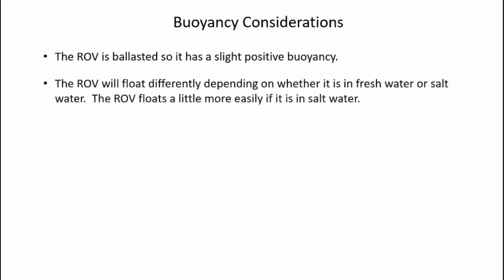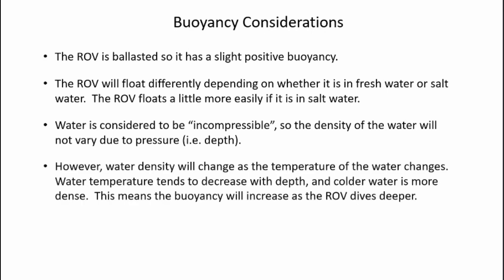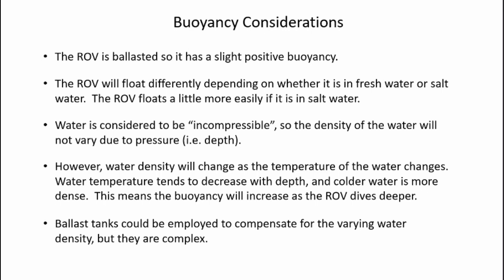System buoyancy is an important consideration when designing an ROV. My ROV is balanced so it has a slight positive buoyancy, so eventually it will rise to the surface without any power. But it allows me to go up and down with very little thrust. The ROV will float differently depending on whether it's in fresh water or salt water. The ROV floats a little more easily in salt water since salt water is more dense. Water is considered to be incompressible, so the density of the water will not vary due to the pressure, or in other words the depth. However, water density will change as the temperature of the water changes. Water temperature tends to decrease with depth, and the colder water is more dense. This means the buoyancy will increase as the ROV dives deeper. I could use active ballast tanks to compensate for the change in water density, but those become very complex, so I avoid using them.